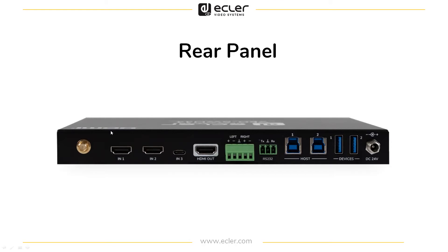This is the rear panel. On the left, a BNC connector for the wireless antenna, two HDMI inputs, one USB-C input, and one HDMI output. There is a stereo balanced audio output for the audio de-embedder, extracting the audio signal from the HDMI output. The serial port for RS-232 control, two USB host ports for connecting PCs, and two device ports for connecting keyboards, mice, and similar devices. And then the power connector.